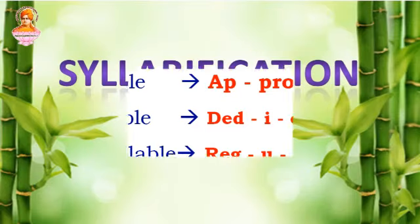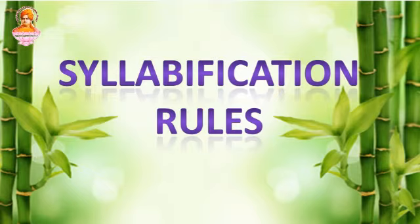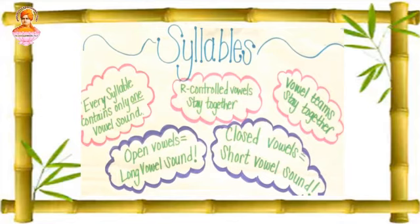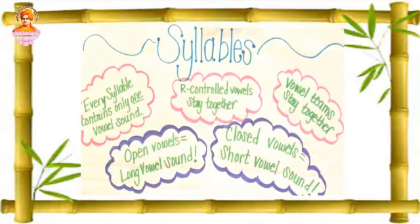Now let's see the syllabification rules — that is, how words are divided into syllables and their patterns. Before seeing the rules, let's understand some basic things about syllables. Every syllable contains only one vowel sound, so while splitting a word into syllables, each part will have one vowel sound in it. Also, R-controlled vowels stay together — if there is the letter R and before that R there is a vowel, they stay together and we cannot separate them.